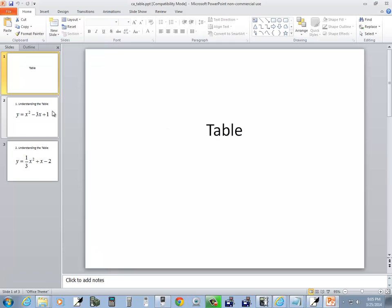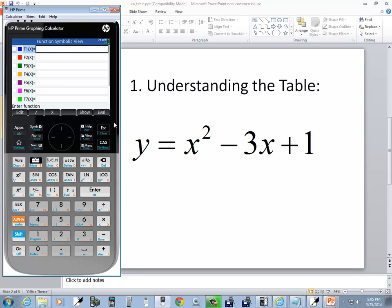And we should be in the Function Symbolic View. So we're going to type in our first one, which is this. So I'm going to type in my X key, X squared, minus 3X, plus 1, and press Enter.